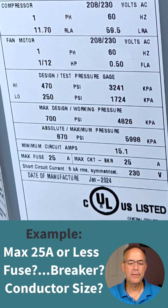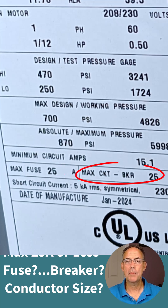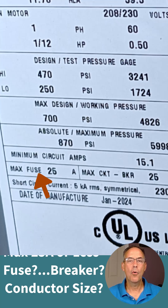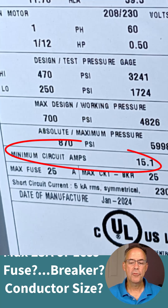Let's walk through a couple of examples. On this tag it tells us maximum fuse 25, maximum circuit breaker 25. The tag can say fuse or circuit breaker, or it can say both, meaning you can use either. On this particular tag we'd be able to use either a fuse or a circuit breaker.